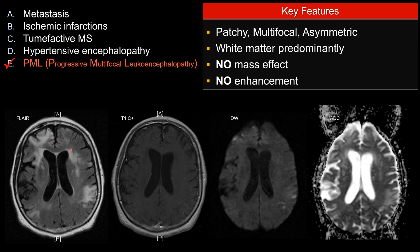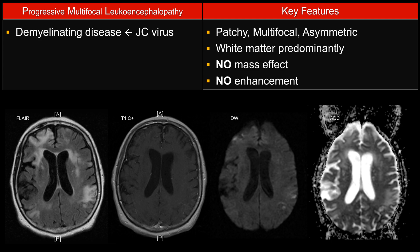When they are bilateral, they tend to be asymmetric in distribution. That is different from, say, PRES. On the board exam, they can ask you the organism affecting PML — the JC virus. It's reactivation of the JC virus infecting oligodendrocytes causing demyelination.